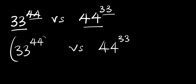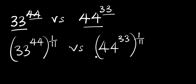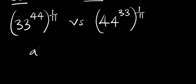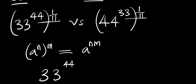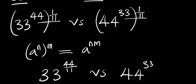Now we can decide to multiply each exponent by 1 divided by 11, doing the same thing on both sides. As usual, if you have a raised to the power of n, raised to the power of n, this equals a raised to the power of n times n — meaning we multiply the two exponents. So we are going to have 33 raised to the power of 44 divided by 11, versus 44 raised to the power of 33 divided by 11.